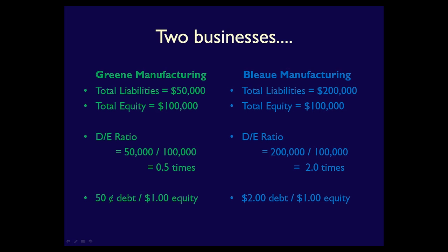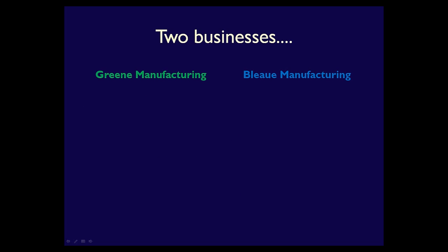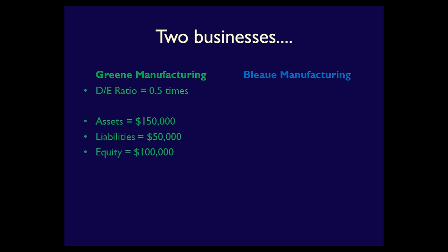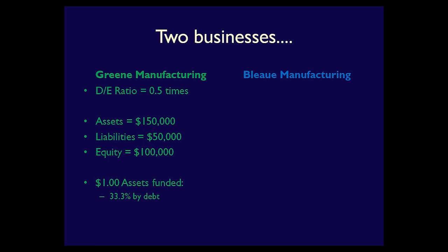Since both businesses are in the same industry, we can compare them and decide which one we want to invest in, or which we want to loan money to. Green's debt-to-equity ratio is 0.5 times, or 50%. We know their assets are equal to their liabilities plus their equity, so assets must be $150,000. If we take the liabilities and divide them by total assets, and then take the equity and divide that by total assets, we learn that $1 of assets is funded 33.3% through debt and 66.7% through equity. Again, we see that this business is equity-financed.